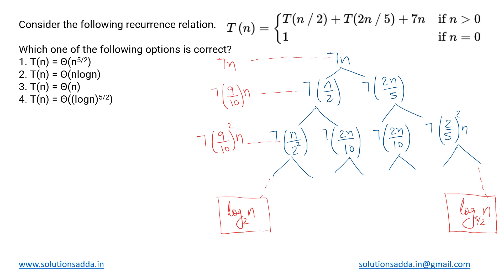This is a recurrence relation problem. We have been given the relation T(n) = T(n/2) + T(2n/5) + 7n for all positive values of n, and when n is 0, T(n) is taken as simply 1.